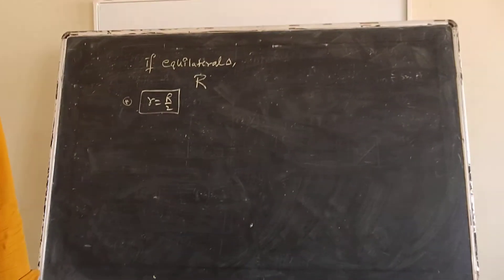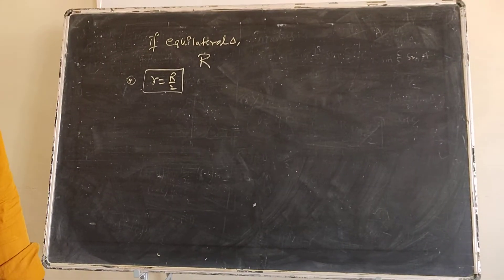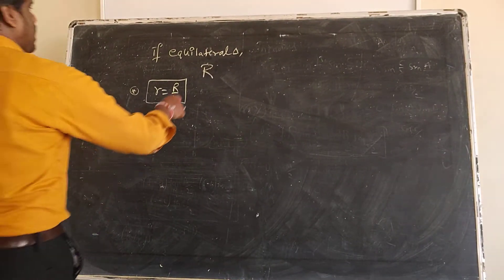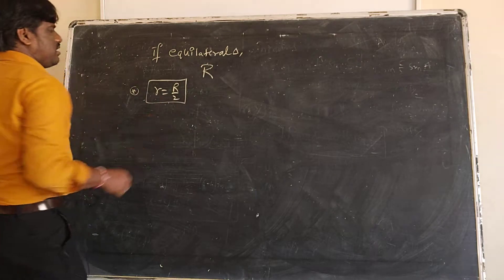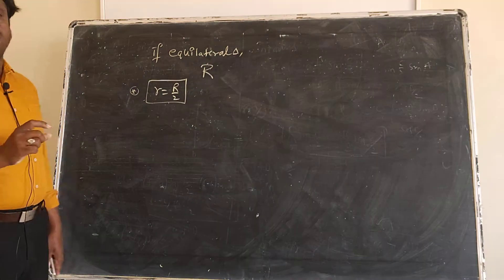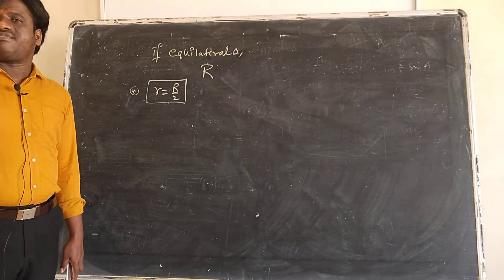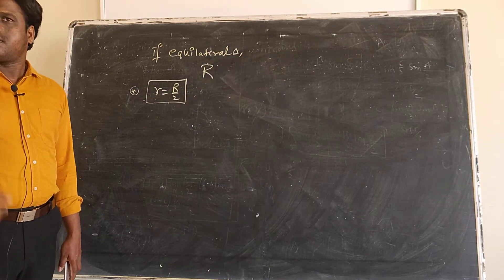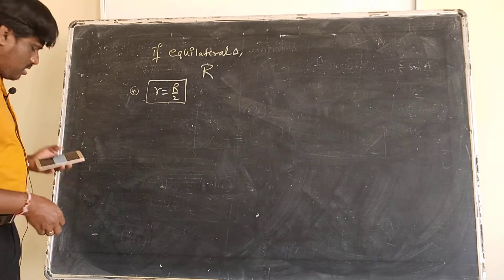For an equilateral triangle, the inradius will be half of the circumradius.